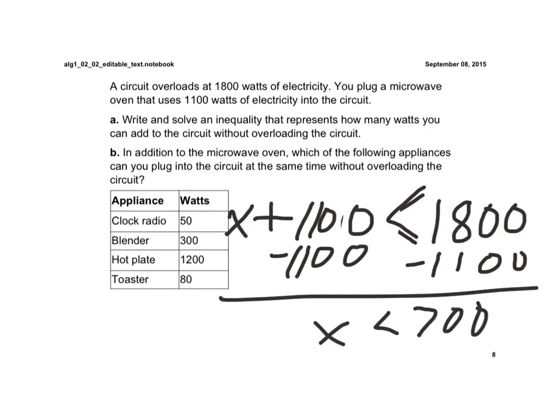So in addition to the microwave oven, which of the following appliances can you plug into the circuit at the same time without overloading the circuit?